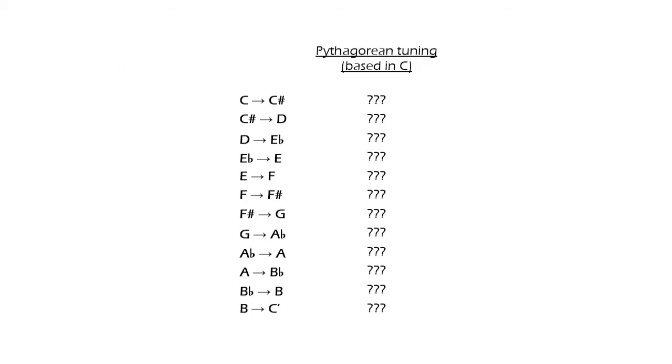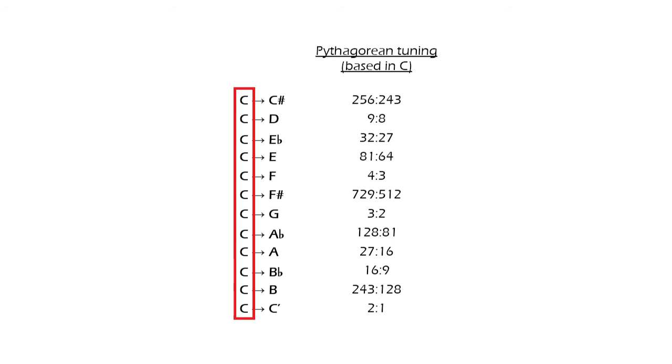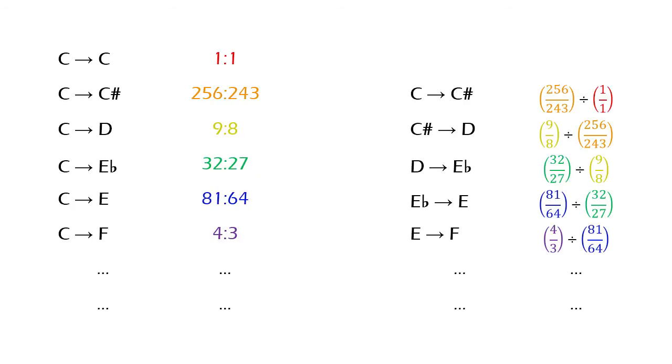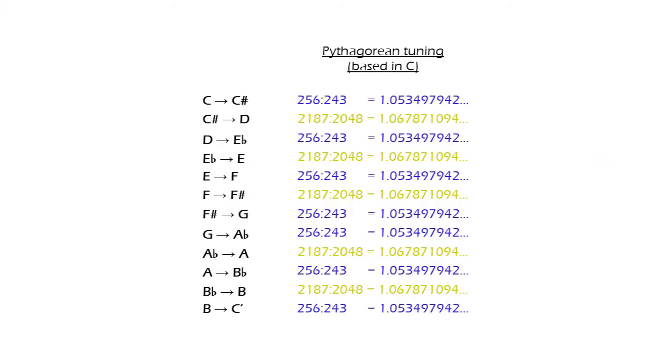To calculate what would have to be the fret distances for Vertus Tuning, first we must find the ratios of all notes relative to the next semitone in Pythagorean tuning, but the Pythagorean ratios we usually find are all relative to a single note. To find the ratio between each tone and its next semitone, we divide each of the ratios we have by the previous ratio, and the numbers we obtain are these.